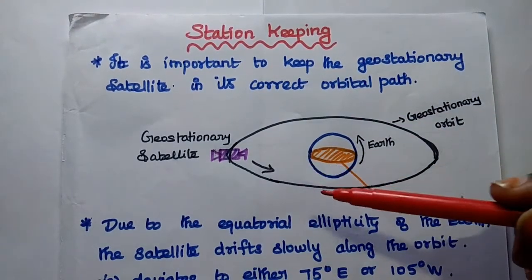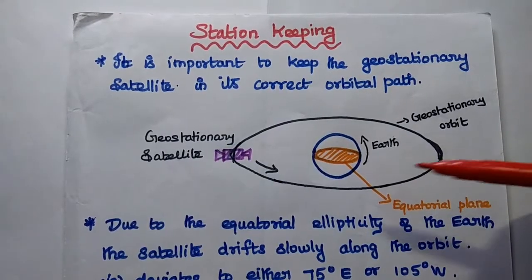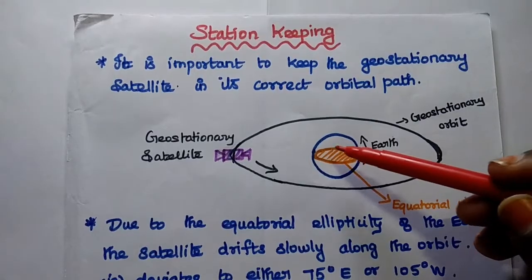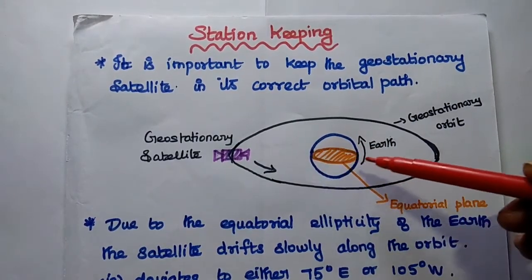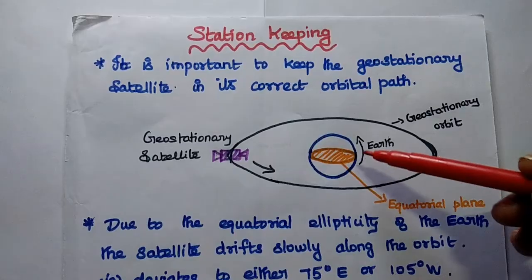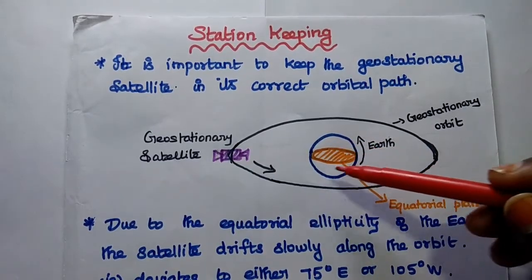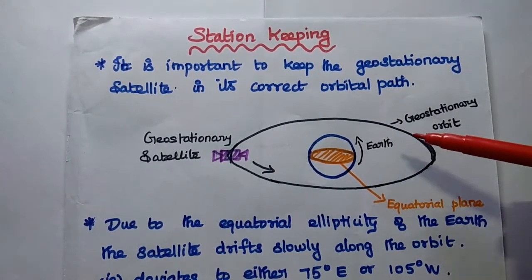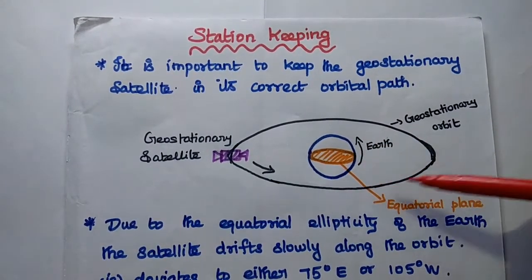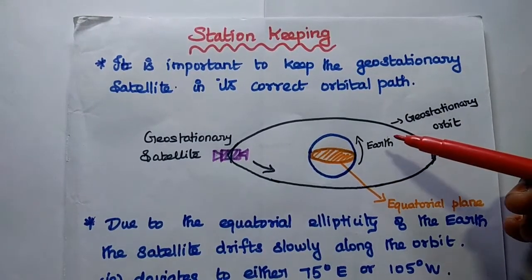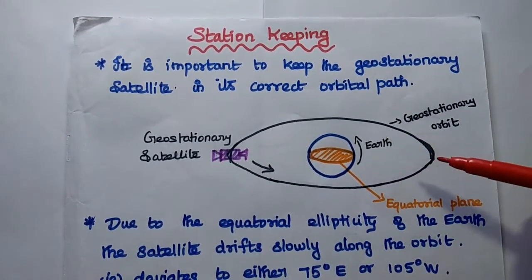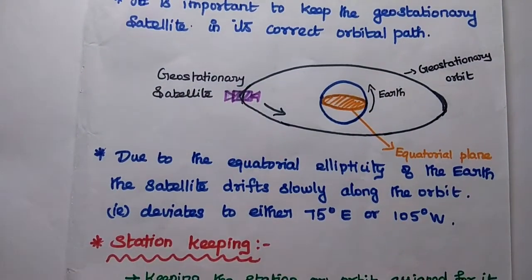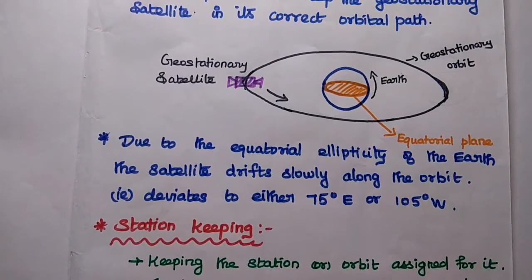It changes its position. Orbital perturbations means equatorial ellipticity of the Earth — the equatorial plane is not a perfect circle, it has some ellipticity. That is called equatorial ellipticity, as well as the gravitational pull of the sun and moon. These perturbing forces drift the satellite to change its position, and we need to avoid this by using techniques called station keeping.